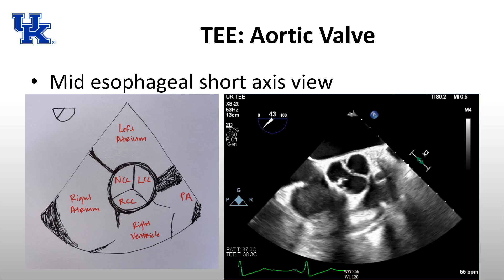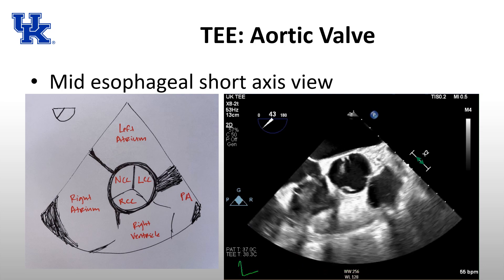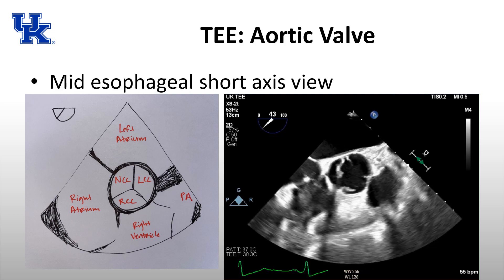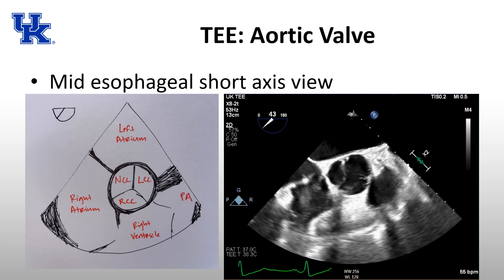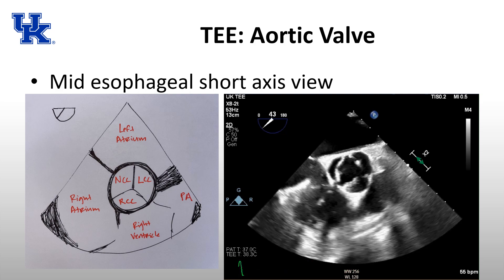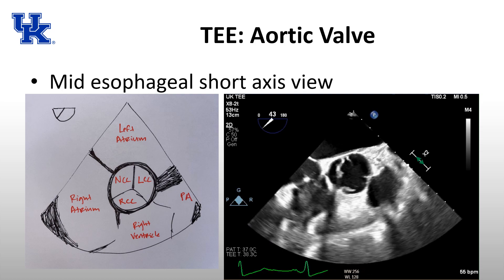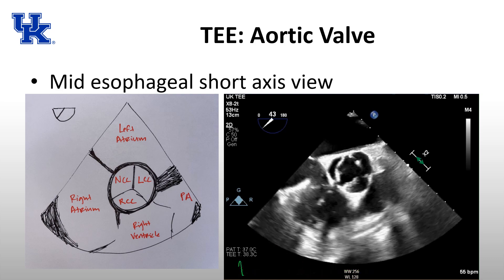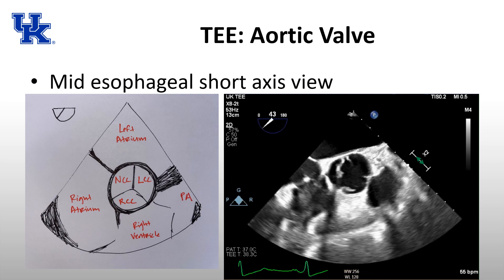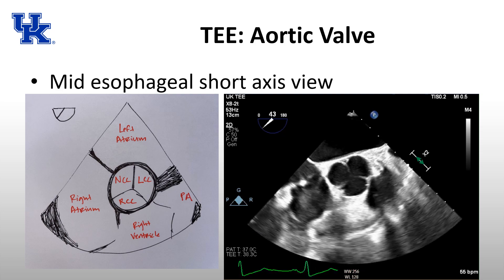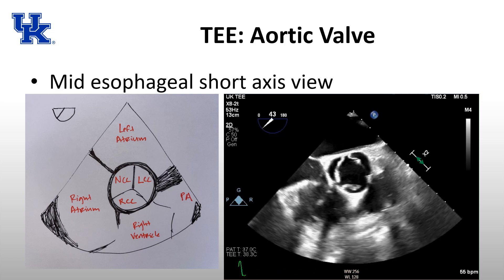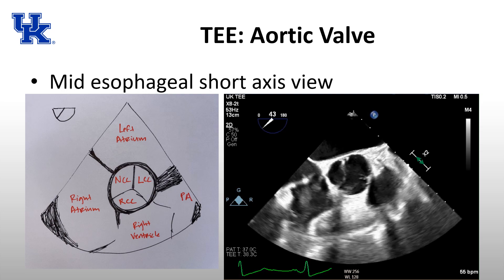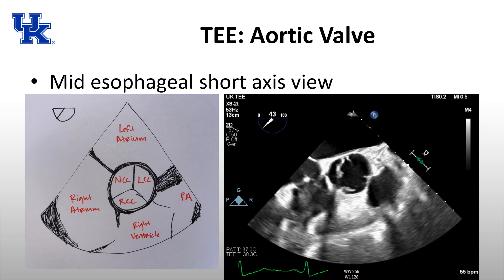Moving to the last TEE view — there were quite a few keywords on last year's ITE related to TEE, and it is an emerging concept that will keep showing up more. The mid-esophageal short axis view is around 30 to 35 degrees and is in the mid-esophagus. Anytime you're in the esophagus, the most posterior structure is usually the left atrium, so that's what shows up at the top of the screen. To the left is the right atrium, and at the bottom is the right ventricle.